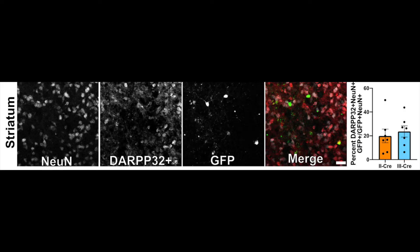So far, we have found that DARP32 positive and GFP positive neurons — where GFP labels Toxoplasma-injected neurons — do co-localize. We are now trying to do the same for FOXP2 positive neurons.